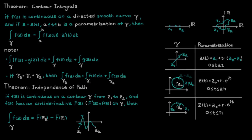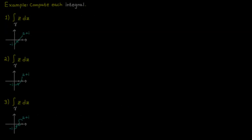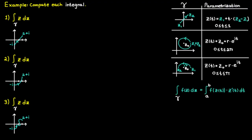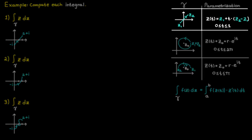That was all the theory for this time, let's continue with some examples. We would like to compute each integral, and the information from the previous section will come in handy. We always start by parameterizing the path. In the first example the path is a line, and therefore we should use the line parameterization.